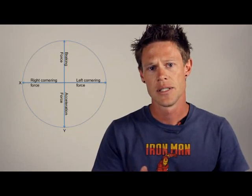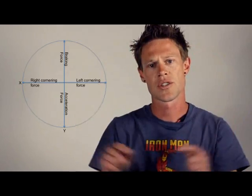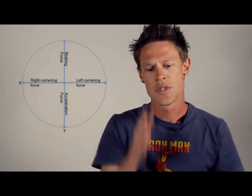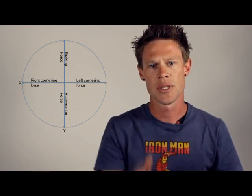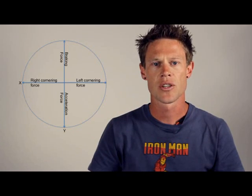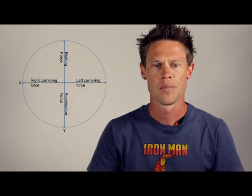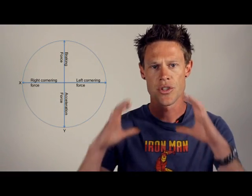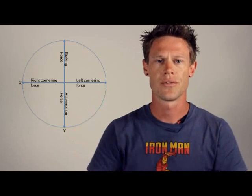The traction circle has an up-and-down axis and a left-and-right axis, joined by a circle that goes around it. Forwards and backwards motion is represented by the up-and-down A-B axis, while the X-Y axis speaks about your lateral forces, your left and your right. At any given point in time, you can only use the circle as traction. Anything outside of that circle is going to be a loss of grip.